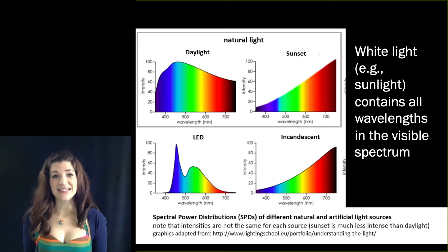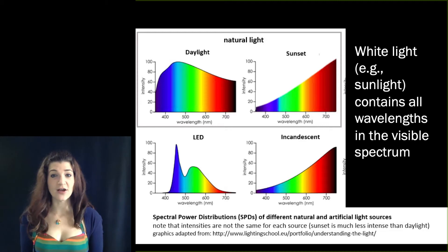So this represents the intensity of light at various wavelengths for various sources of illumination. Sunlight produces what we call white light, a combination of all wavelengths of the visible spectrum simultaneously.